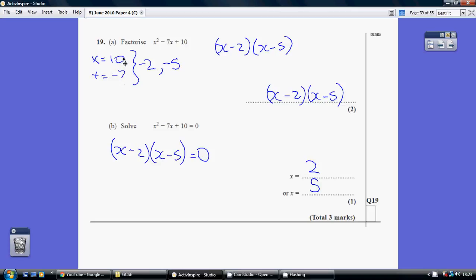So which two numbers multiply to make 10 but add to be minus 7? That's minus 2 and minus 5. So our answer factorising is x minus 2, x minus 5.